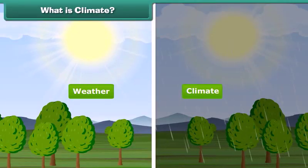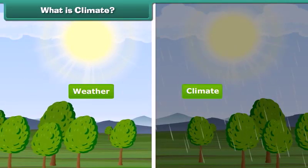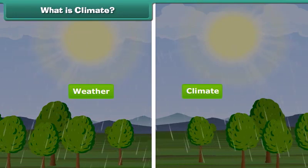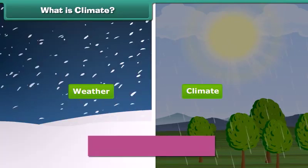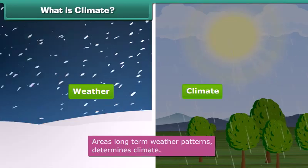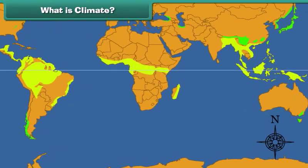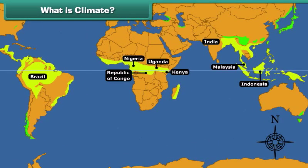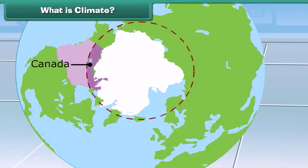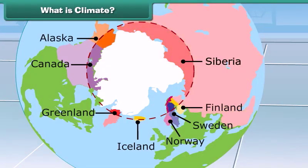Is weather and climate the same? No. Areas' long-term weather patterns determine climate. For example, areas near the equator have warm climate and areas near the poles have much colder climate. So children, now you can easily differentiate weather from climate.